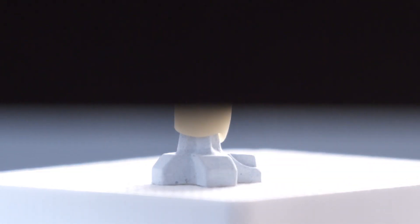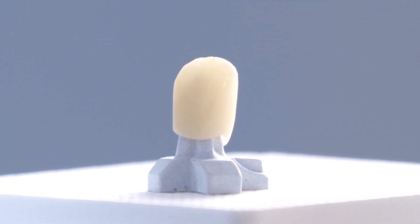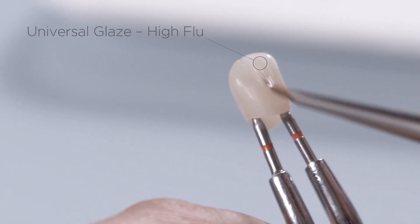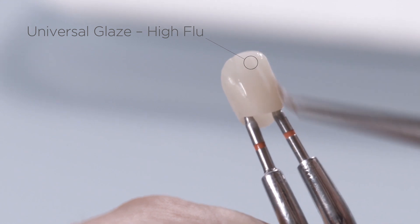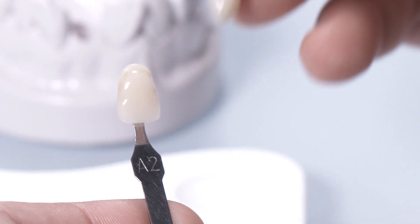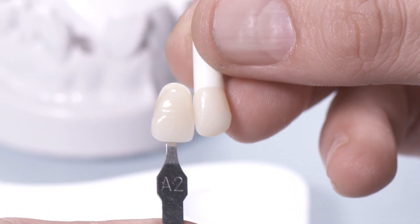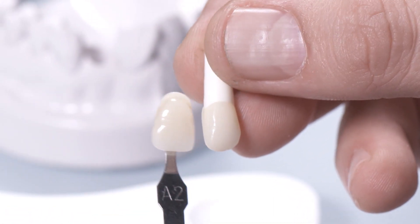After stain firing, add HIFLU Universal Overglaze to the monolithic restoration. The final shade check against the shade tab confirms the quick and easy shade reproduction with appealing aesthetics.